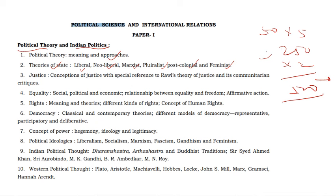Then normative political values: the concept of justice with special reference to Rawls' theory of justice and its communitarian critique. Equality — social, political and economic equality, the relationship between equality and freedom, positive discrimination or affirmative action. Rights — meaning and theories of rights such as social contract theory, natural right theory, moral theory, legal theory, welfare theory; first, second and third-generation rights, legal, constitutional and moral rights, and the concept of human rights.